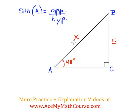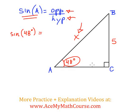Good day, let's solve for x using the sine ratio. The angle A is 48 degrees, so we're going to do sine of 48 degrees equals opposite over hypotenuse.